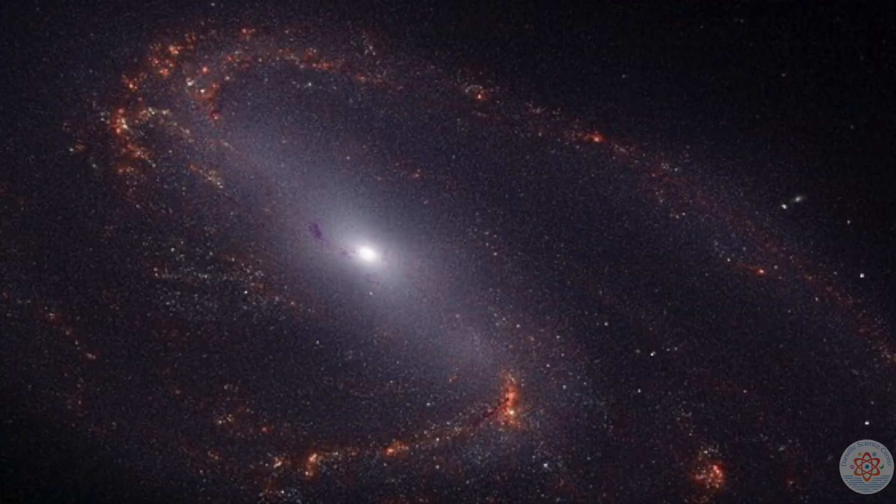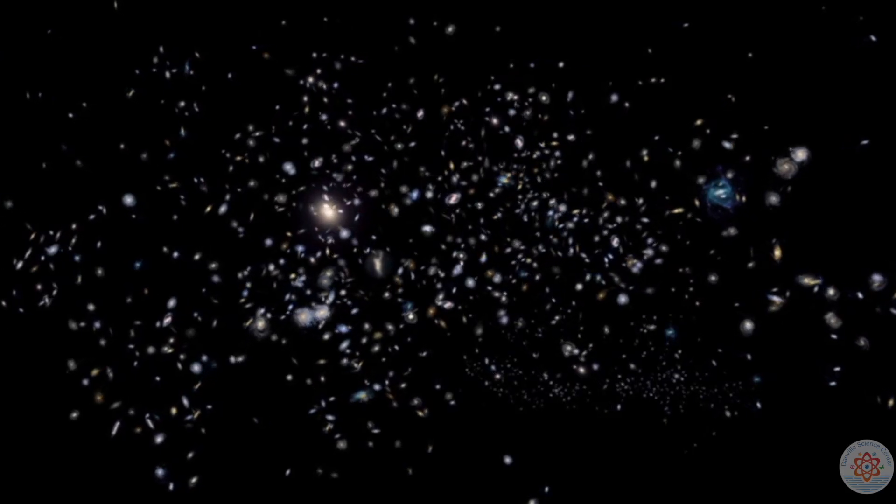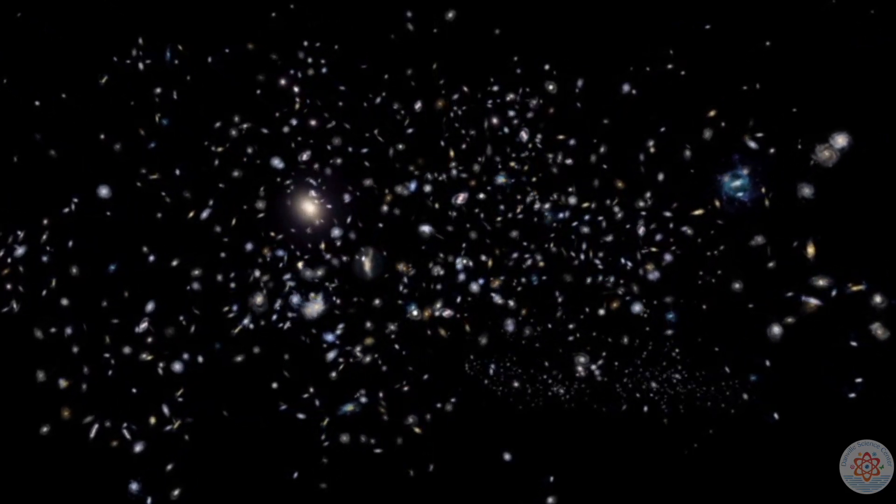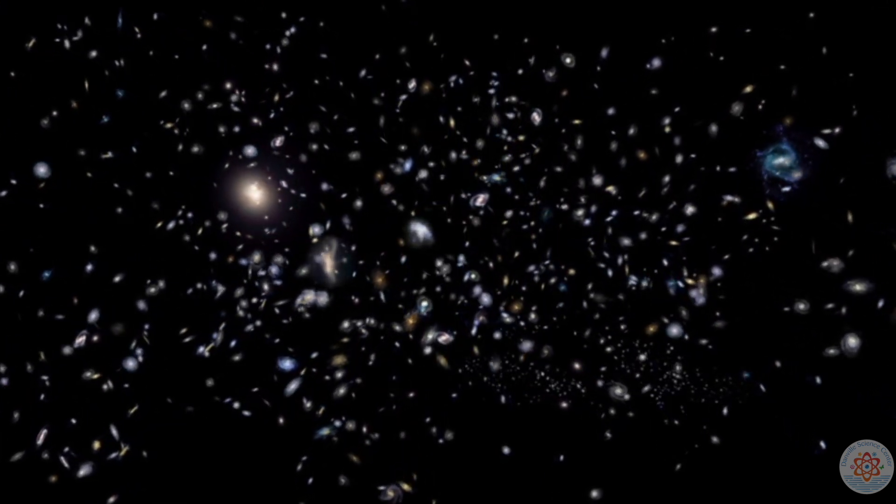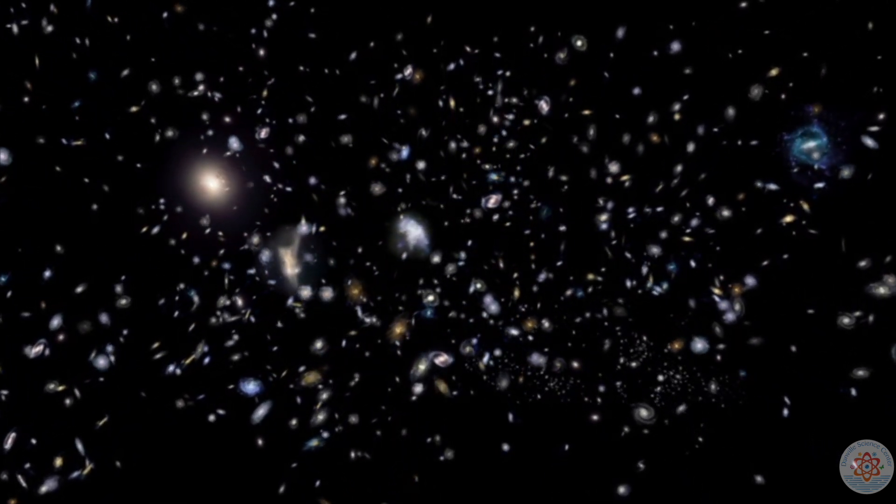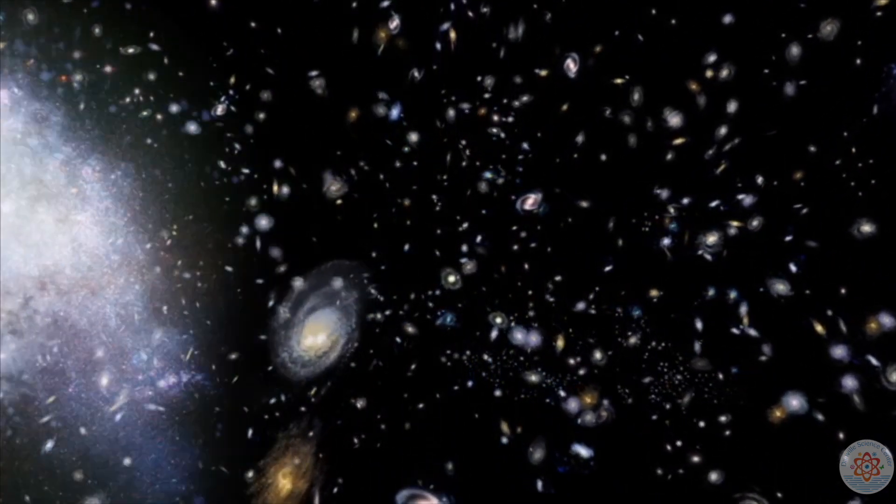One of these, M66, is affected by the nearness of the other two, as the gravity of M65 and NGC 3628 are actively pulling stars away from M66. This action may eventually lead to a dwarf galaxy forming around M66, composed of its former outermost stars.